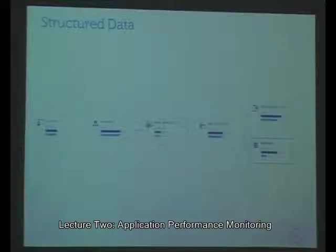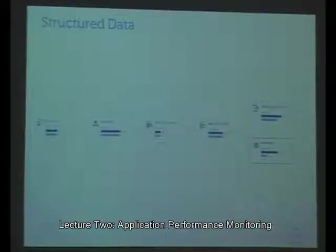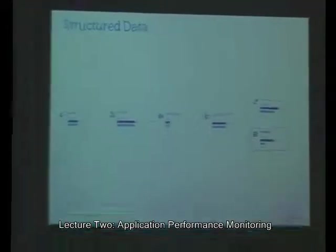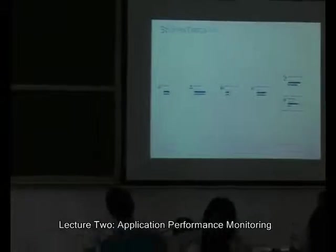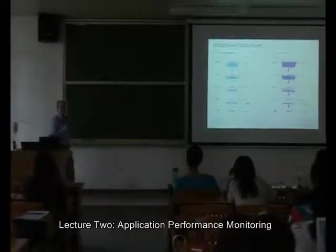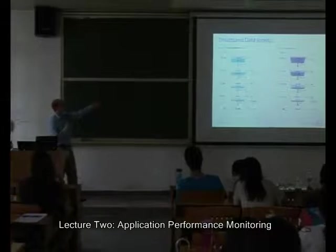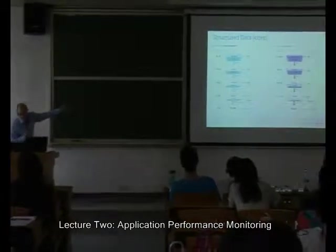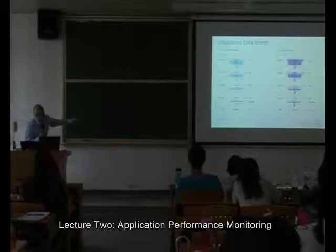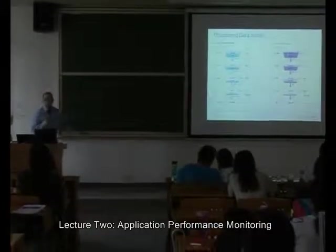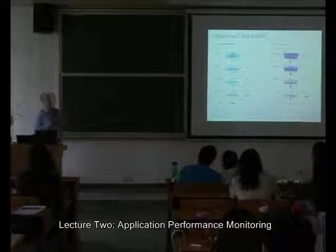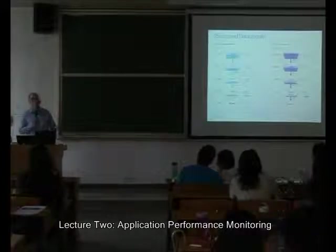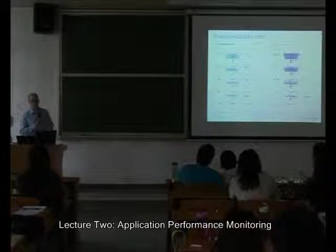It has to be a snapshot — you create this structure every time you're recording it, link all the objects together, put in the numbers, and do it again in the next five minutes. Here's another example: users visiting my website — they logged in, viewed their cart, added an item, checked out, and maybe left. I can't store this as individual metrics; I need to store it as a structured set of data.